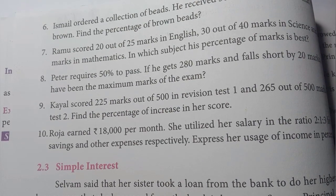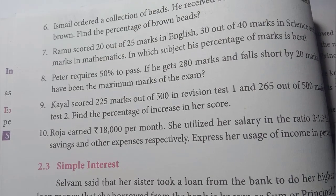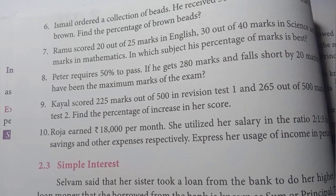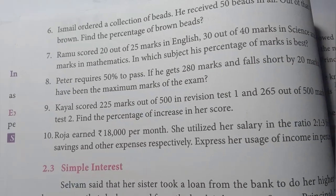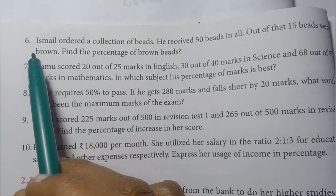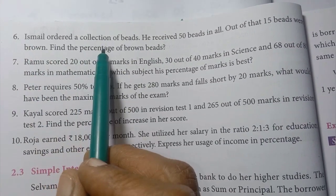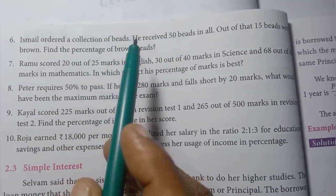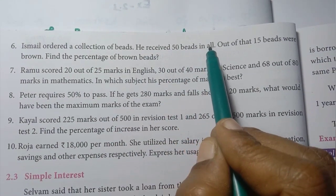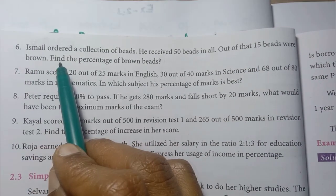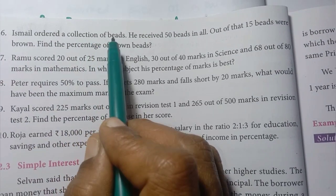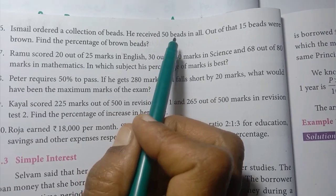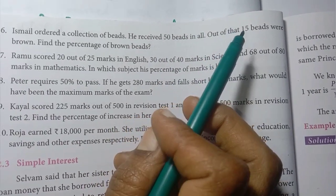Greetings everyone, welcome to our channel Student Station. In this video we cover 7th standard Maths, Term 3, Chapter 2, Exercise 2.3, sum number 6. Ismail ordered a collection of beads and received 50 beads in all. Out of that, 15 beads were brown. We need to find the percentage of brown beads.